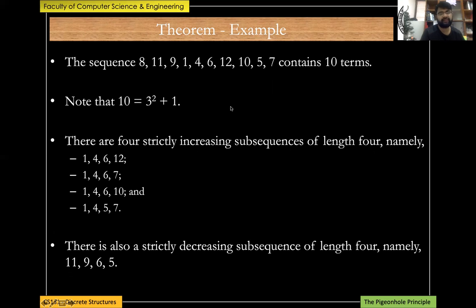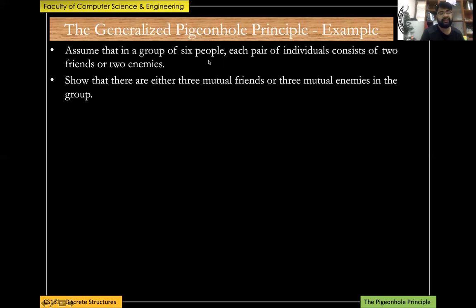Another application: assume that in a group of six people, each pair of individuals consists of either two friends or two enemies. Show that there are either three mutual friends or three mutual enemies. Three mutual enemies means each of the three is an enemy of the other two; similarly for mutual friends.